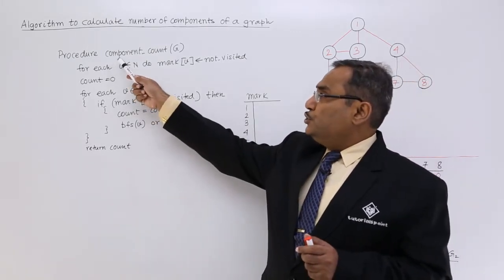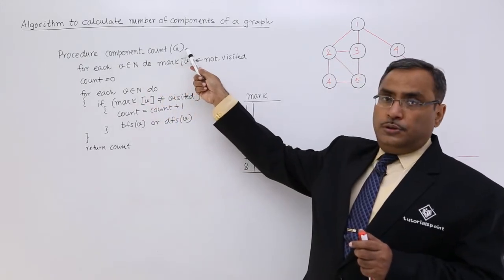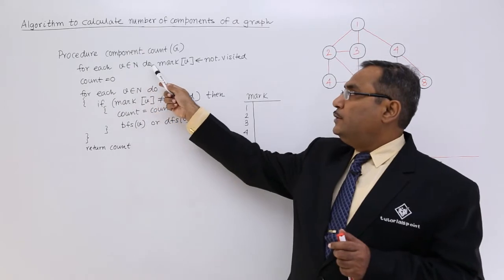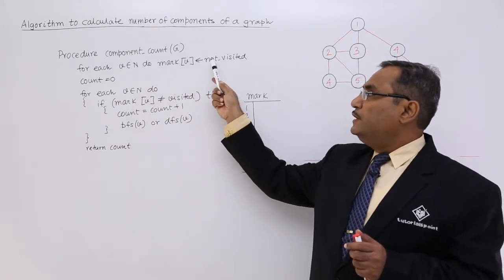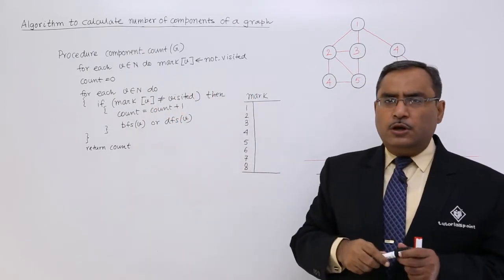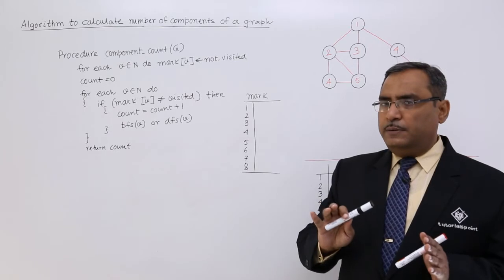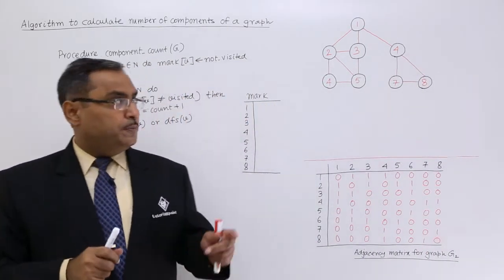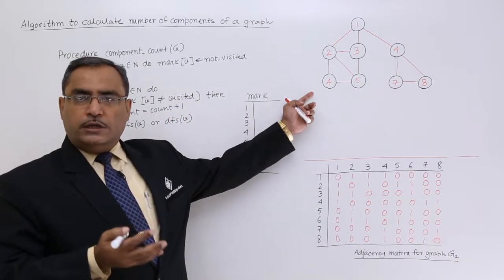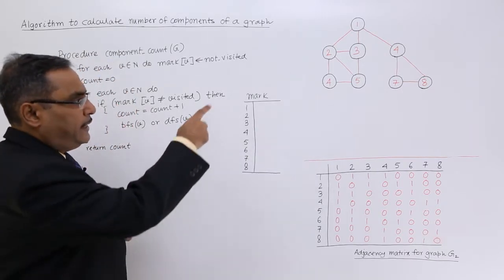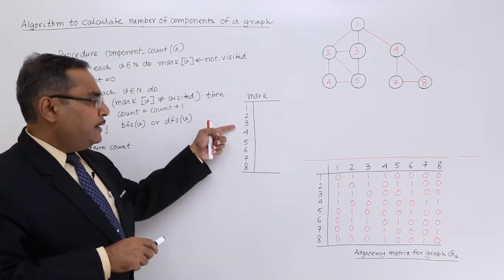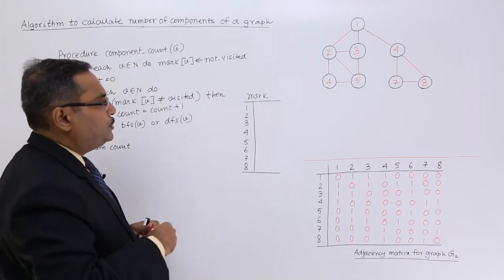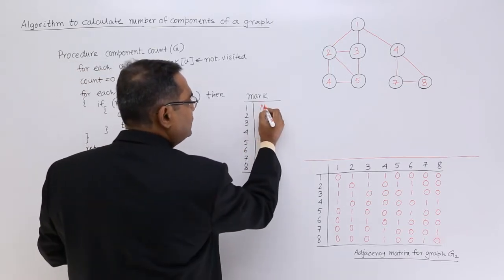The procedure 'component count' takes g as the graph. For each v belonging to n, mark of v is set equal to not visited. We did this several times in our BFS and DFS. For this particular graph which we considered earlier, we have 8 nodes. So the mark array will have 8 locations, all initialized to not visited as usual.